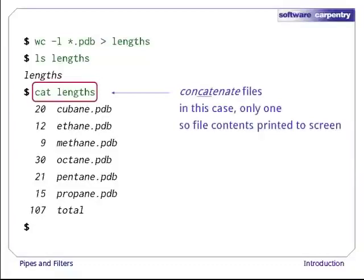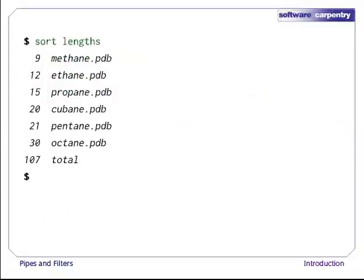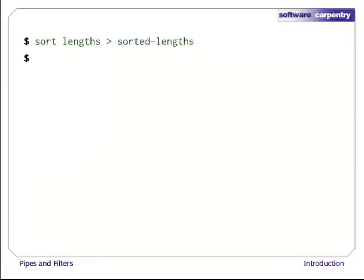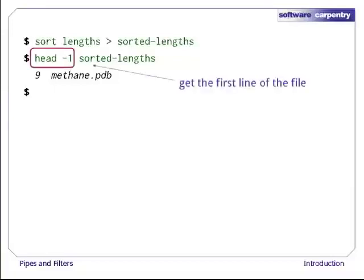Now let's use the sort command to sort its contents. This does not change the file; instead, it prints the sorted lines to the screen. We can put the sorted list of lines in another temporary file called sorted_lengths by putting > sorted_lengths after the command, just as we used > lengths to put the output of wc into lengths. And now, we can run another command called head to get the first few lines in sorted_lengths. Giving head the argument -1 tells us that we only want the first line of the file.